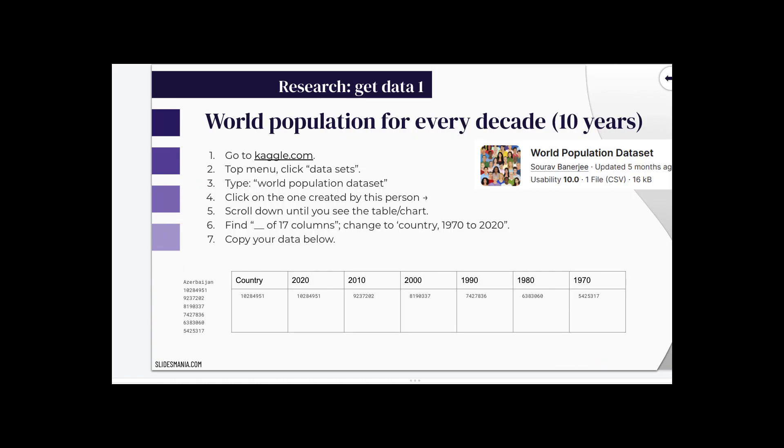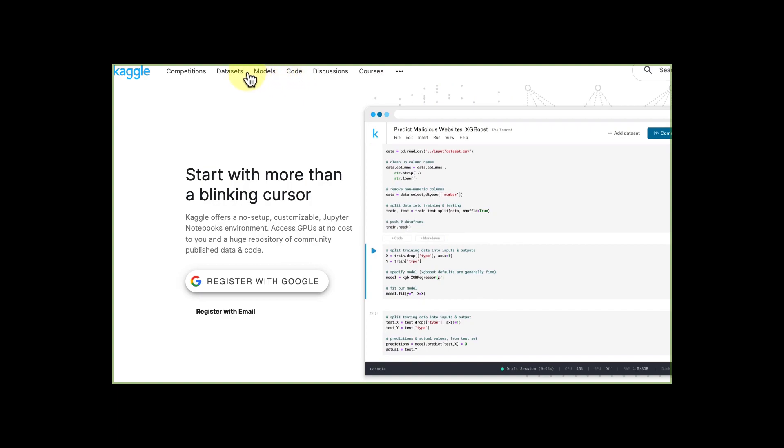Alright, based off of your country, I wanted to get the population for your country. And we're doing this for every 10 years. So I created a chart. Here's my country, Azerbaijan. We went to Kaggle.com. Then we clicked on the top menu and clicked on Datasets. Typed in World Population Dataset. Looked for this one. Click on the one created by this person over here. Scroll down until you see the table of the chart. On Find where it says 17 columns, and then change it to these restrictions. Country, 1970, 1980, all the way up to 2020. And then copy your data.